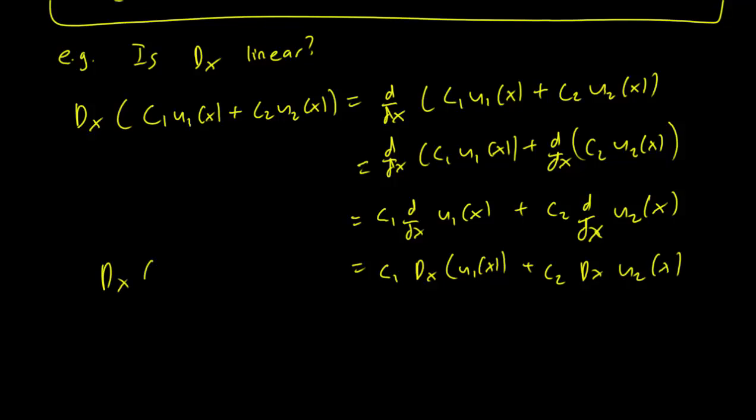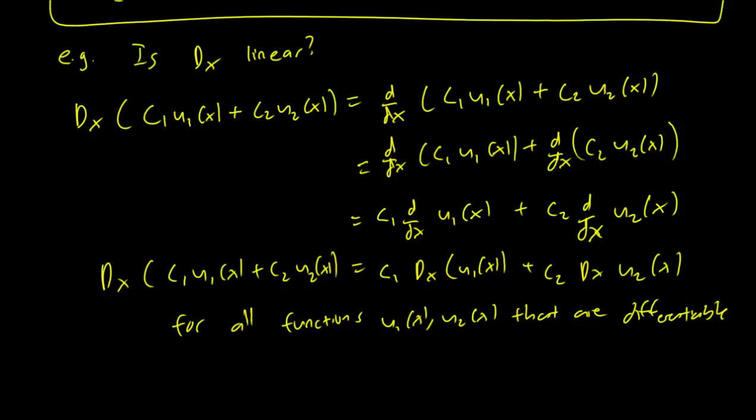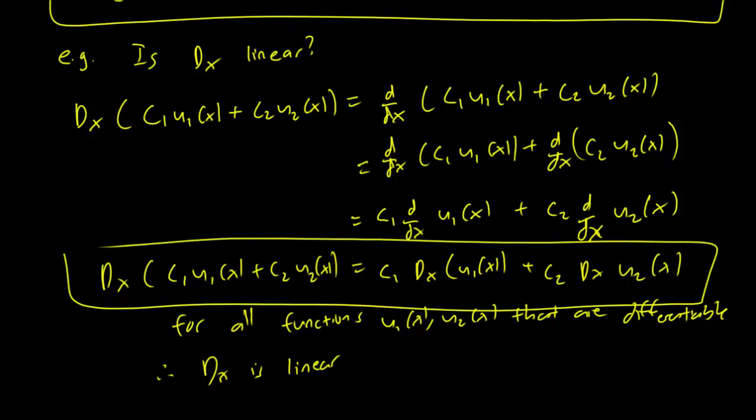So because this is true, and this is true for all functions u1(x), u2(x) that are differentiable, this implies that dx is linear. Because we have this equation, we know that the dx behaves nicely with respect to constant multiplication, and it behaves nicely with respect to addition and subtraction.